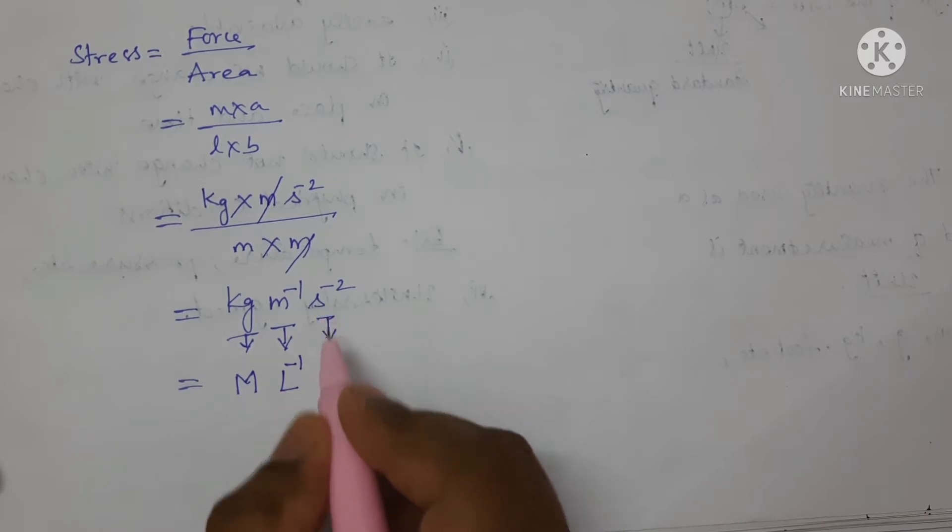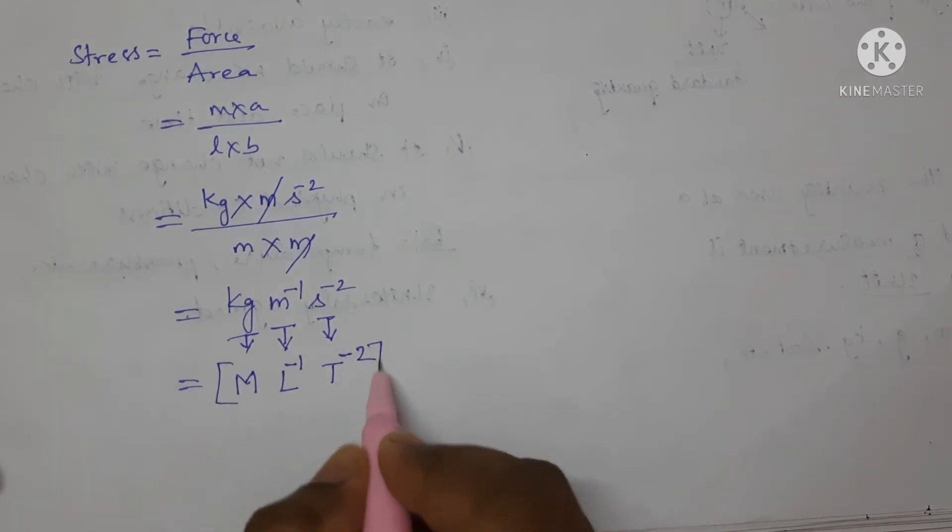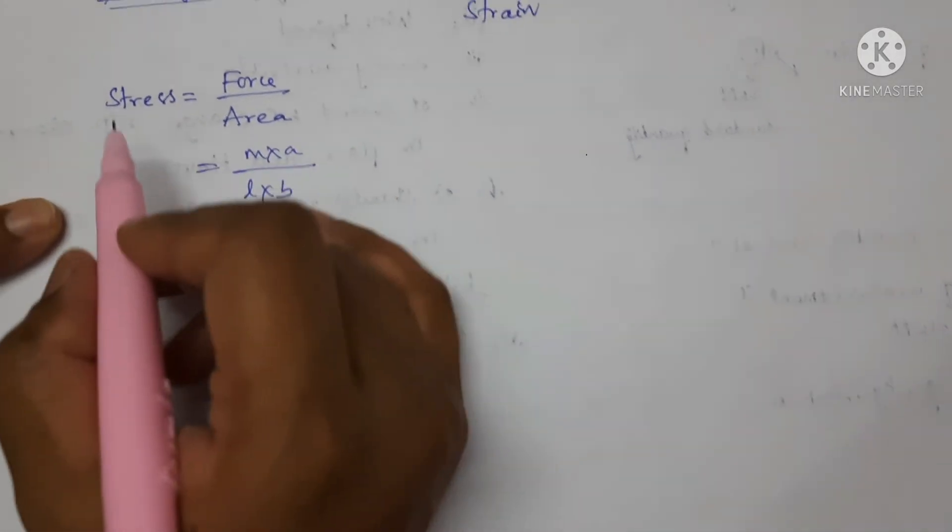Here second is there. And second is expressed in terms of capital T, power minus 2. So, T power minus 2. Should be enclosed in square brackets. This is the dimension of formula for stress.